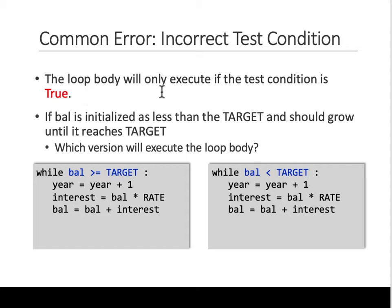We know that the loop body executes only when the condition is true. So if balance is greater than target, will that ever happen? No, because initially your balance is 10,000 and target was 20,000.